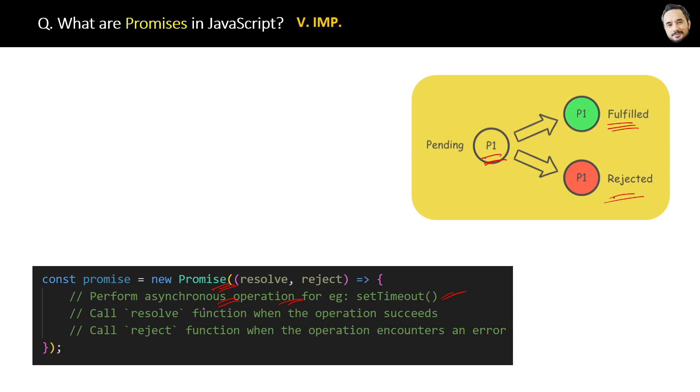Now the question is: where is the declaration or body of these resolve and reject functions? The answer is that resolve and reject are inbuilt functions provided by the JavaScript engine. You do not have to write any declarations for them.